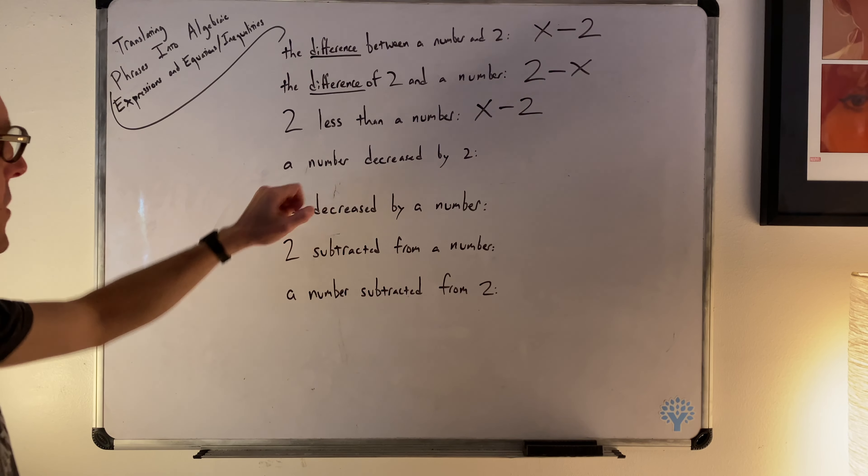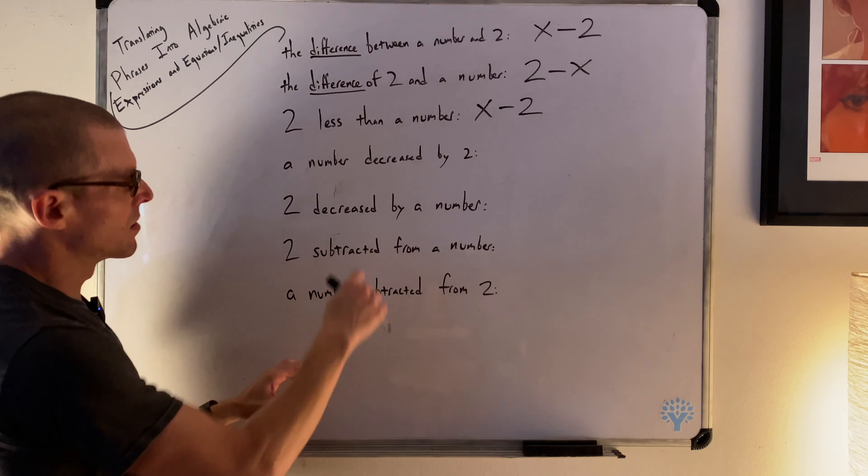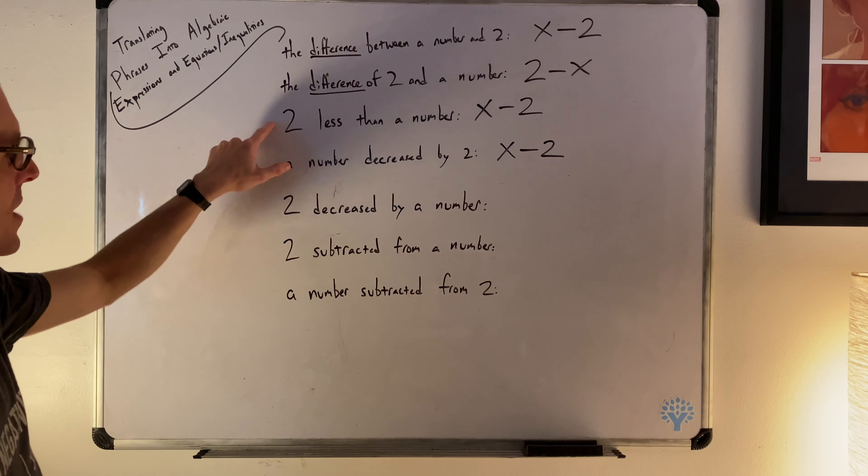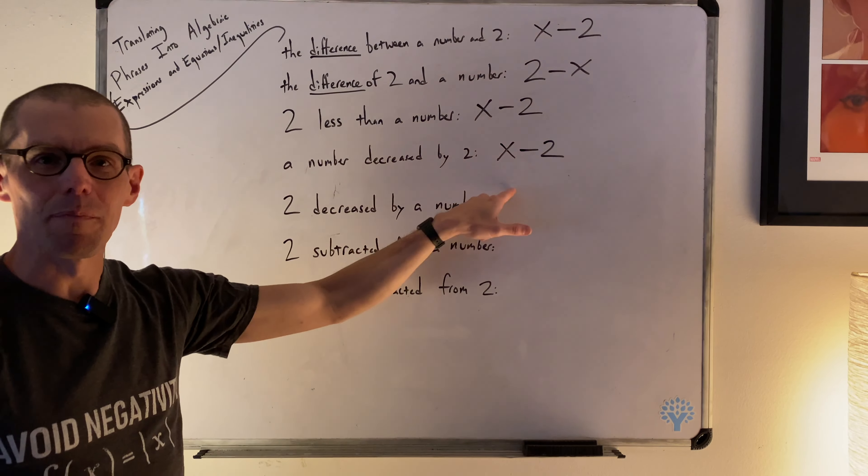Be careful — that's an easy mistake to make. Two less than a number is x minus two. Now here we have the word 'decreased.' A number decreased by two — our number is x. If you have x and it goes down by two, that's x minus two, not two minus x. A number x decreased by two is x minus two.